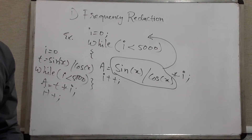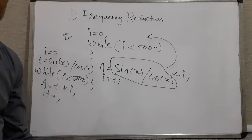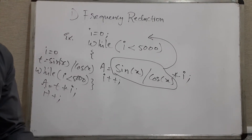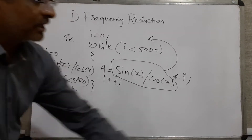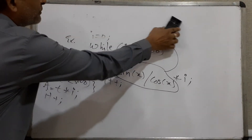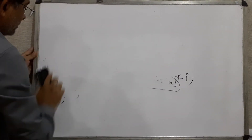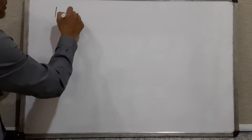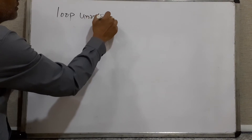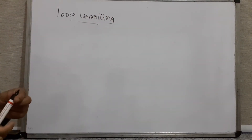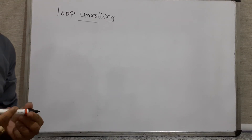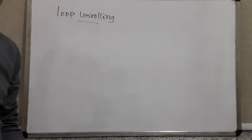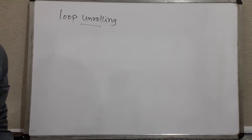Next is loop unrolling. Loop unrolling means we reduce the number of times the loop will be executed — we reduce the number of times the comparison of conditions is done. In other words, we reduce the number of times we enter into the loop or perform the comparison.